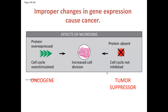Changes in gene expression are really important to understand because they can lead to cancer. Cancer is a disease caused by an accumulation of mutations, and mutations can have two very different effects — but they will all lead to increased cell division, which leads to tumor development and cancer.